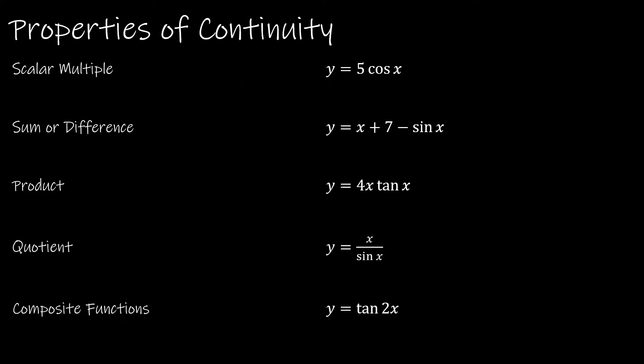Let's look now at some of the properties of continuity. We'll start with scalar multiple. And that essentially says if you have a function that is being multiplied by a scalar, being some value that doesn't include a variable, that you can just say the continuity is the same, whether or not it is being multiplied by that scalar multiple. So five times cosine of x has the same continuity as cosine of x, which is that it's continuous everywhere.